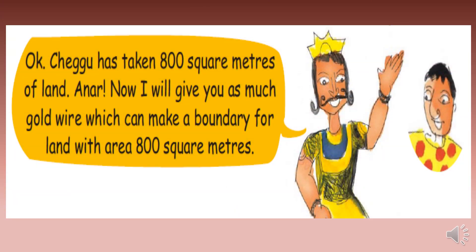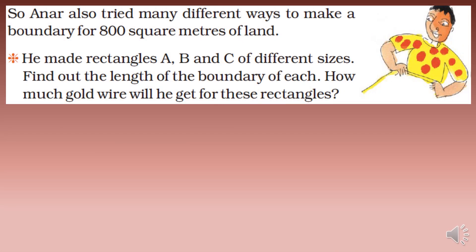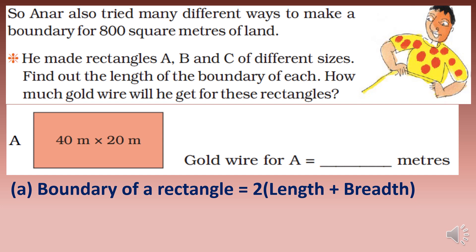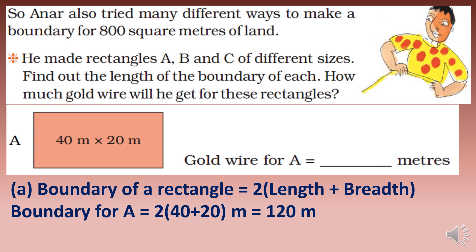Anar was told: I will give you as much gold wire as can make a boundary for land with an area of 800 square meters. Anar tried many different ways to make a boundary for 800 square meters of land. He made rectangles A, B, and C of different sizes to find out the length of the boundary of each. Rectangle A is 40 by 20 meters. Its boundary equals 2 times (40 plus 20) equals 120 meters, so he gets 120 meters of gold wire.